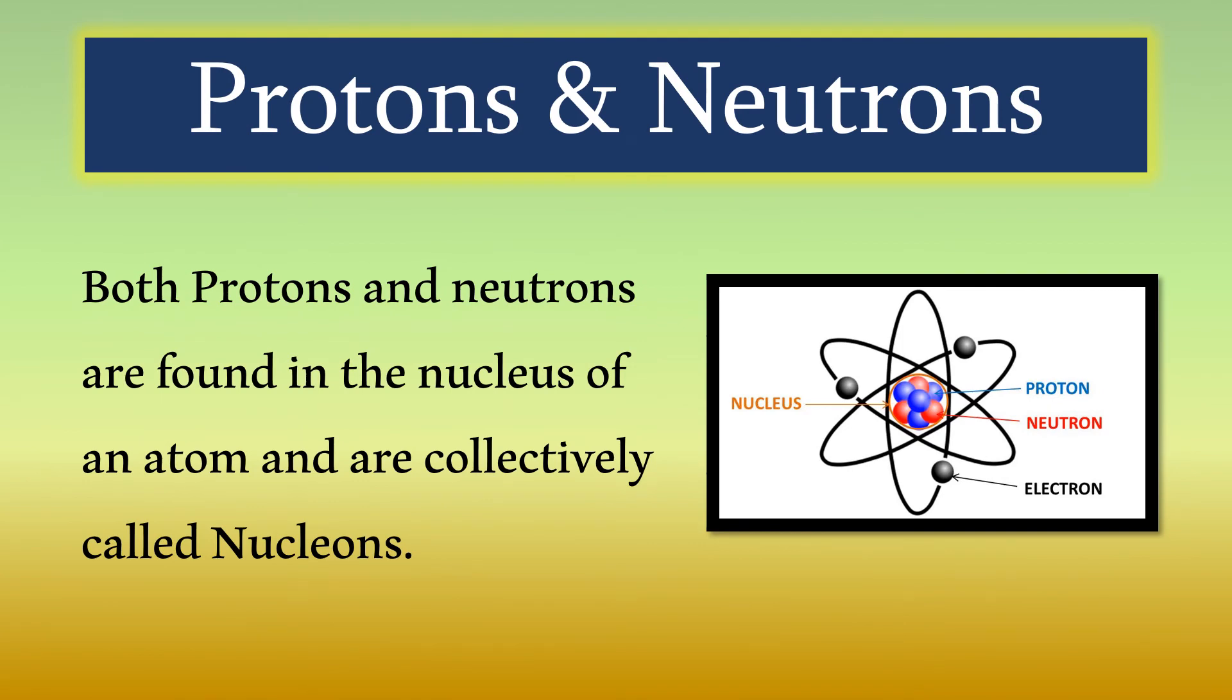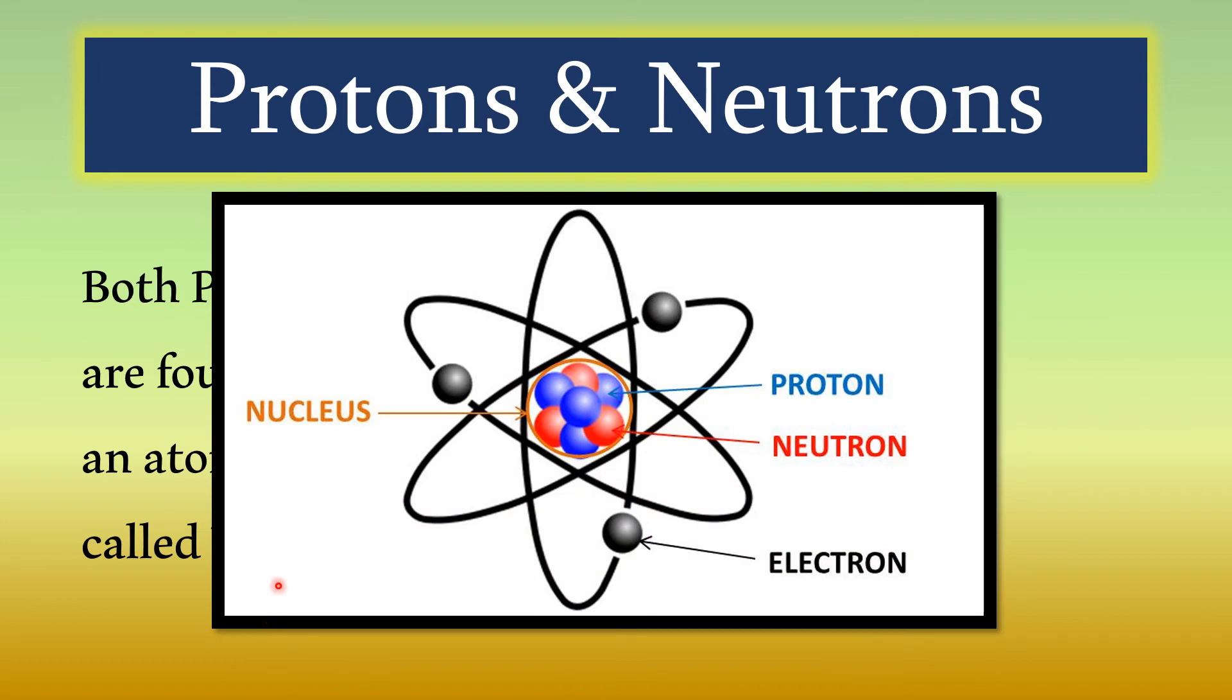Now, both protons and neutrons are found in the nucleus of an atom and are collectively called nucleons. In this zoomed-up picture, you can clearly see the nucleus and its constituents, the protons and the neutrons.